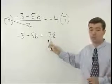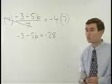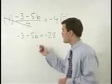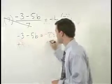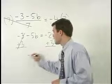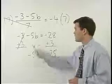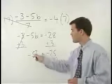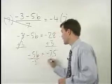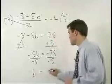Notice that our fractions are gone and we're left with a problem that looks just like the ones we were doing in the previous section. Our next step is to isolate the B term by adding 3 to both sides. We get negative 5B equals negative 25. Don't forget to bring down the negative. To get B by itself, divide both sides by negative 5 and B equals positive 5.